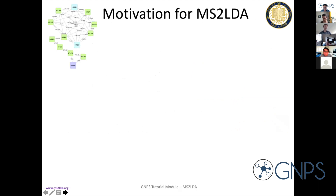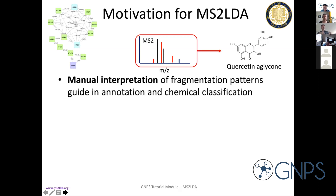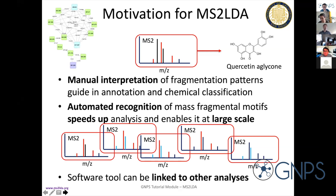The motivation for MS2LDA was really that during my PhD, it took me half a year to analyze one LC-MS file for a tomato extract. That didn't look like it was going to be very sustainable — if it takes half a year to do one file, you can calculate how long it will take to do 50 files. What I was basically doing is looking to find patterns: which fragments belong together and which ones I can correlate to, for example, a quercetin building block or kaempferol or other flavonoids commonly occurring in tomato. The rationale was: if you can automate this, if you can find a way to automatically recognize these things, it will speed up the process of analysis, enable it at larger scale, and also allow you to link it out to other analysis tools like molecular networking.